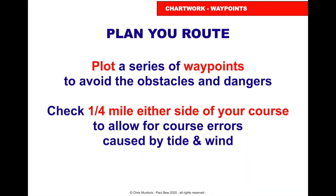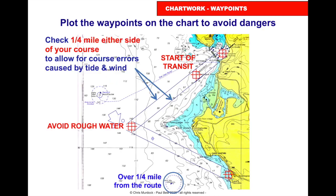Plan your route — plot a series of waypoints to avoid the obstacles and dangers. Check a quarter mile either side of your course to allow for course errors, bad steering, and errors caused by wind and tide. Here we've got the waypoints plotted with a safety buffer of a quarter mile either side.